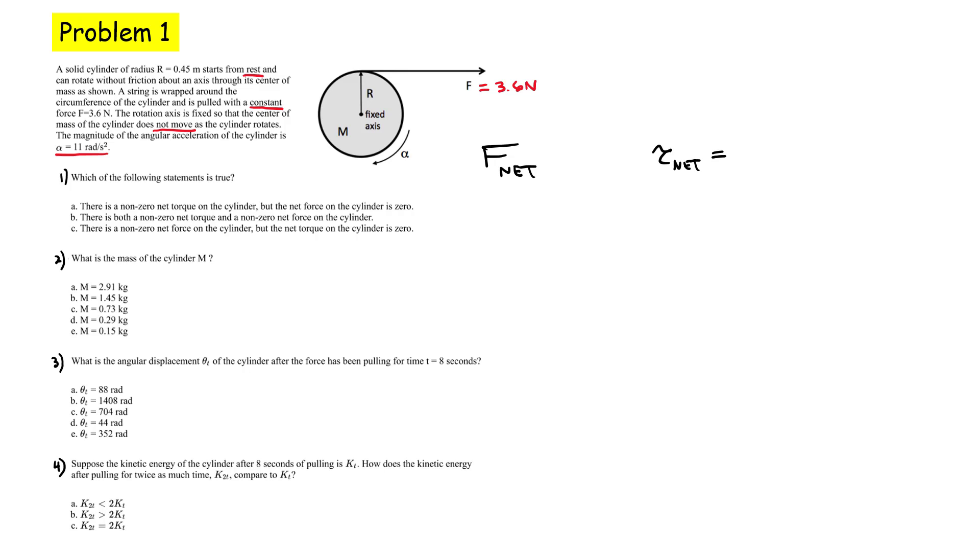So we're comparing the net force and the net torque. We fixed our axis right here and we have this force that is acting a certain distance from the pivot. So we're going to have a net torque of RF. There might also be a force acting right at the pivot point, but that one doesn't produce a torque. So we do have a non-zero net torque, which is why it's speeding up. You should remember that Newton's second law for rotation is τ_net = I α. If there is a net torque, there's an angular acceleration. This is also a fixed axis problem. They tell us that the center of mass of the cylinder does not move. So that means that the net force acting on it should be zero because the acceleration of the center of mass is zero. So there's a non-zero net torque, but the net force is zero. The best choice that we have here is choice A.